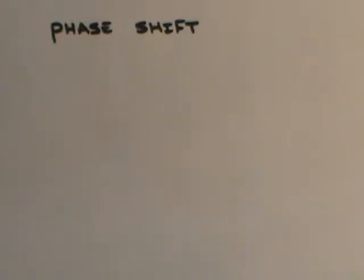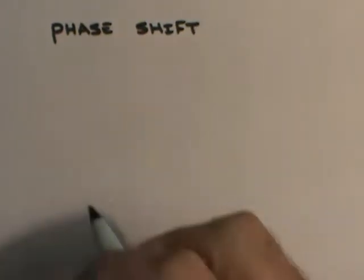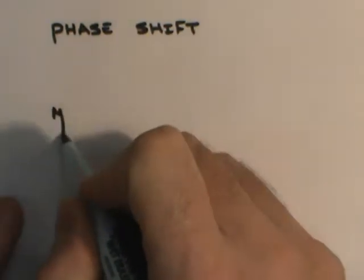I want to talk about the concept of a phase shift. A phase shift basically requires that the student understands a parabola. For example, if I said something like y equals x squared...